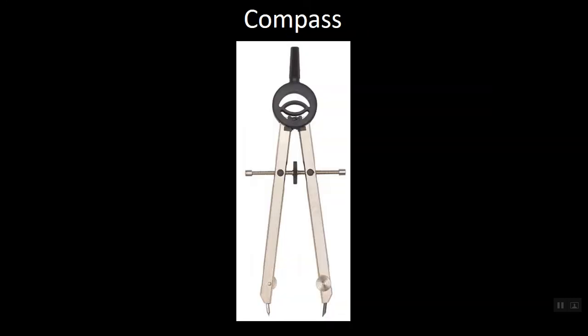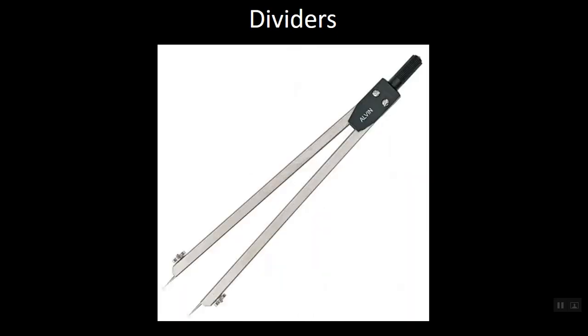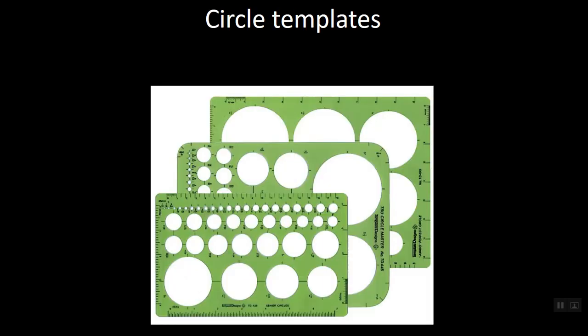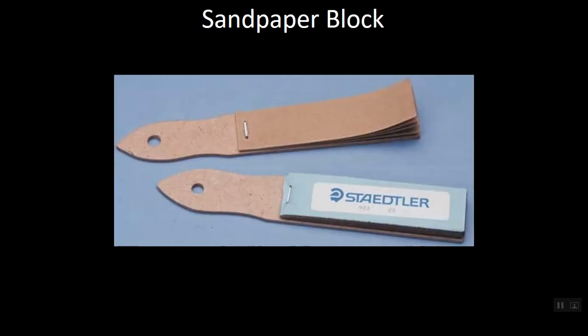The dusting brush is used to brush off the paper so we don't smudge it or grind our fingers into it. Compasses are used to draw perfect circles and arcs. Dividers are used to step off distances or transfer distances from one place to another. Templates are used to draw repetitive shapes quickly and easily — you have a circle template with your toolkit. The sandpaper block can be used to sharpen or blunt the edge of your compass, and also to point your pencils or lead holder to a nice point.